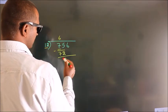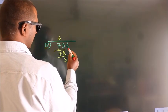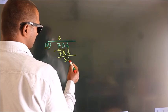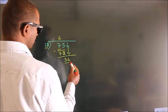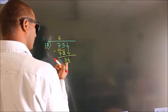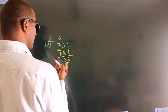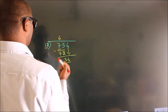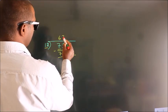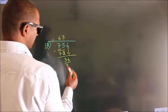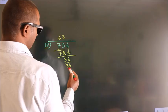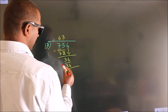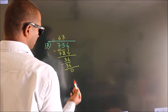After this, bring down the beside number. So 6 comes down, giving us 36. When do we get 36 in the 12 table? 12 threes are 36. Now we subtract. We get 0.